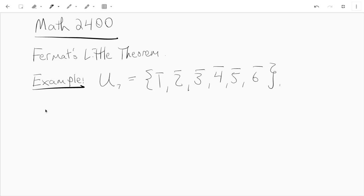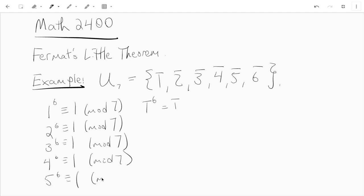So what the theorem says is that for the prime 7, 1 to the sixth is congruent to 1 mod 7. Or in other words, the congruence class of 1 to the power of 6 is just the congruence class of 1, but also 2⁶ ≡ 1 mod 7, 3⁶ ≡ 1 mod 7, 4⁶ ≡ 1 mod 7, 5⁶ ≡ 1 mod 7, and of course 6⁶ ≡ 1 mod 7.